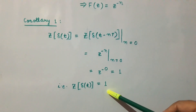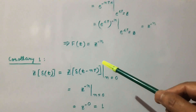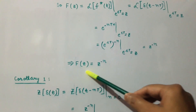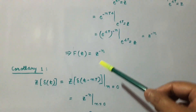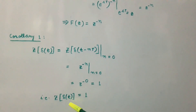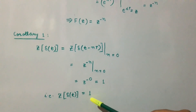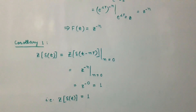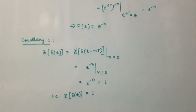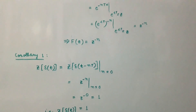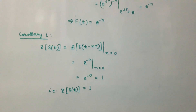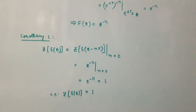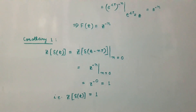So the Z transform of the shifted unit impulse comes out to be z^(-n), and similarly the Z transform of the unit impulse function comes out to be 1. This is how we find out the Z transform of the shifted unit impulse and the Z transform of the impulse function. That is all in this presentation — see you in the next presentation.